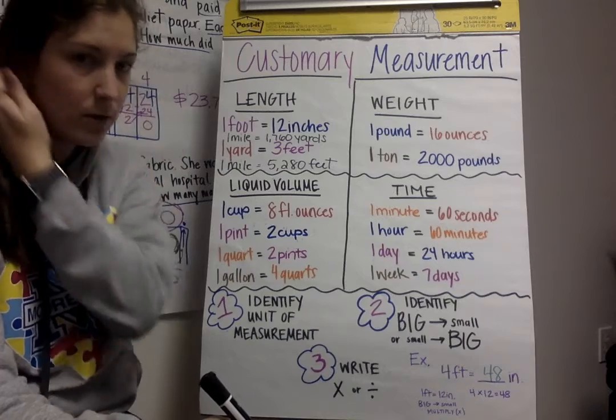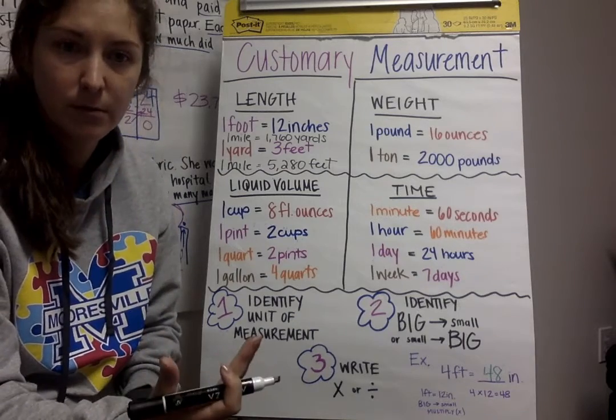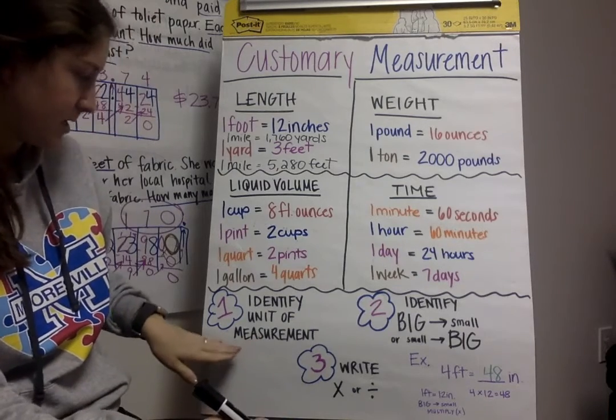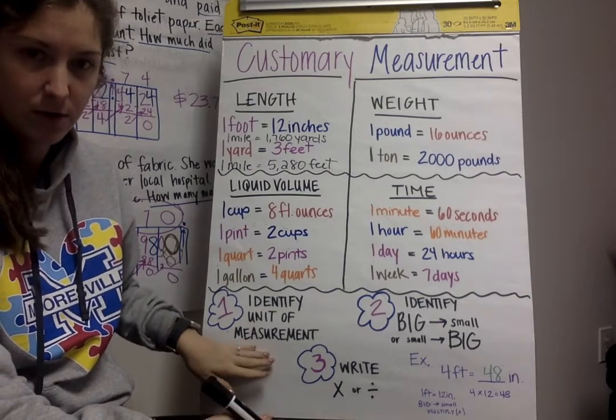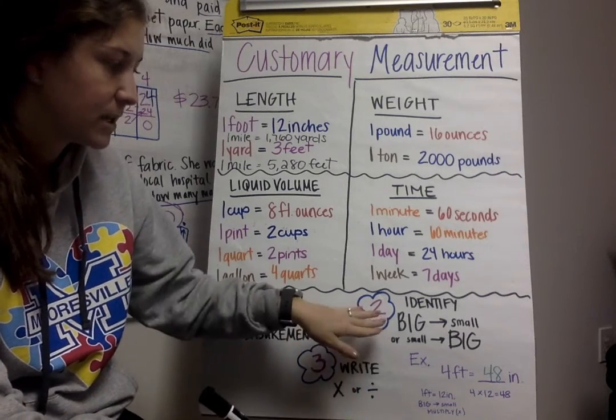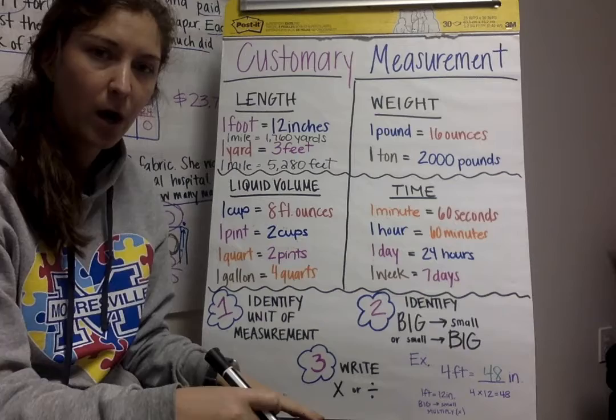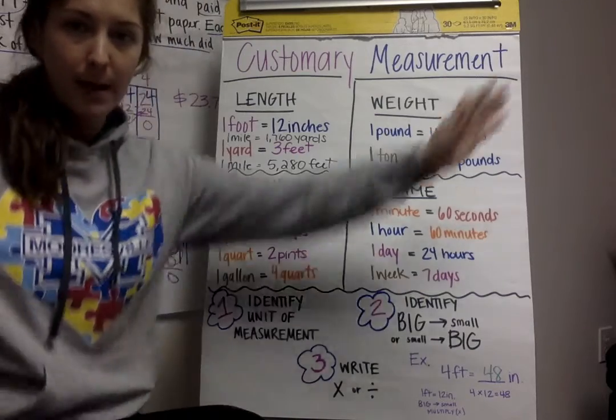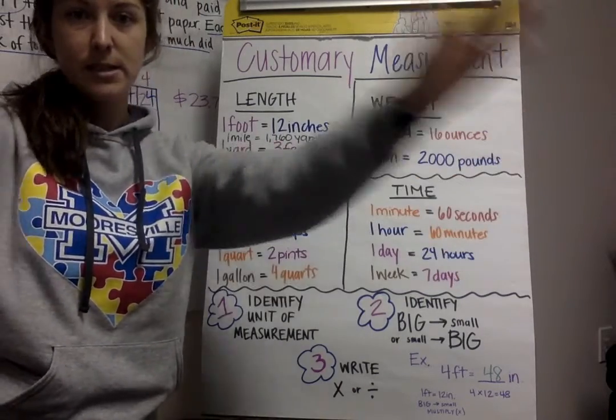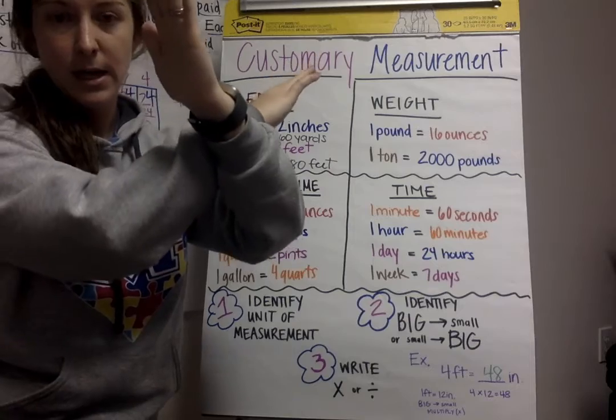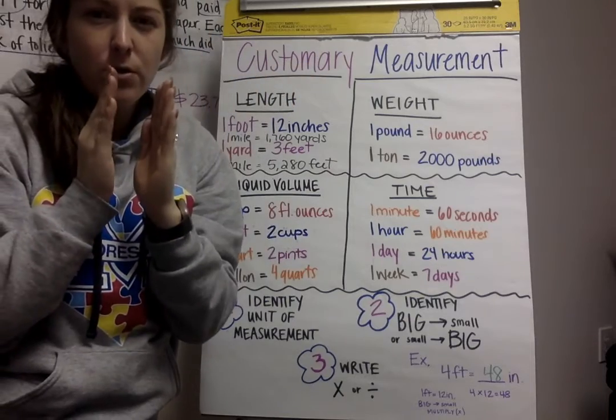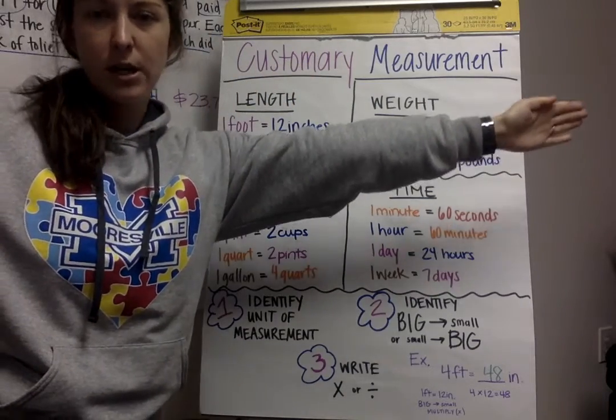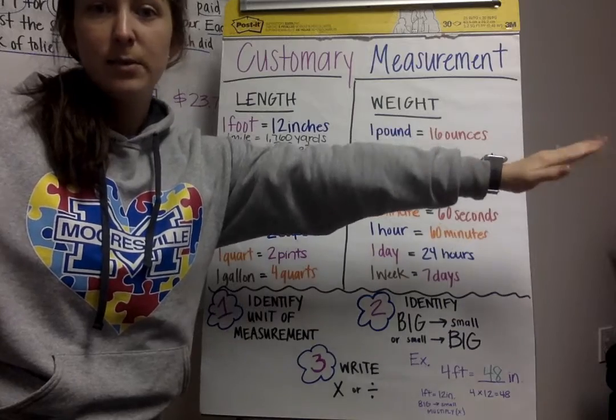So down at the bottom, you'll see the three steps in order, what you need to do in order to convert units of measurement. Step one would be to identify the unit of measurement. Step two is identify whether it's big or small. When we go from a big unit to a small unit, you're going to multiply.